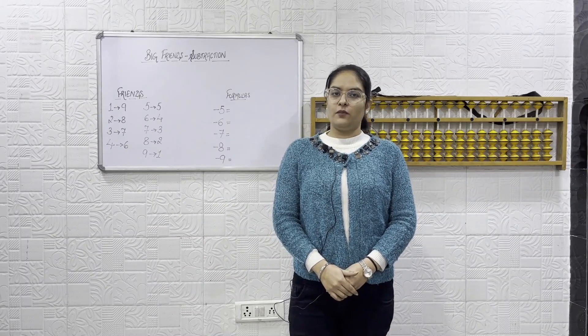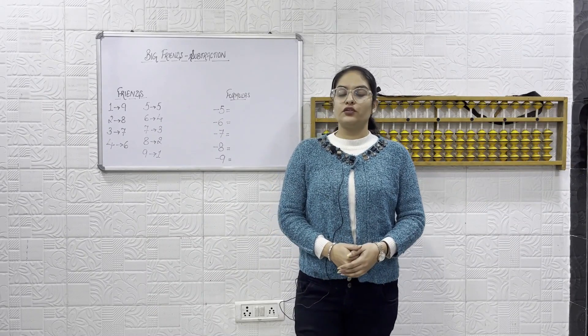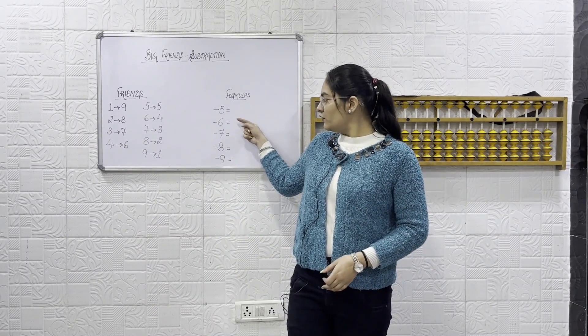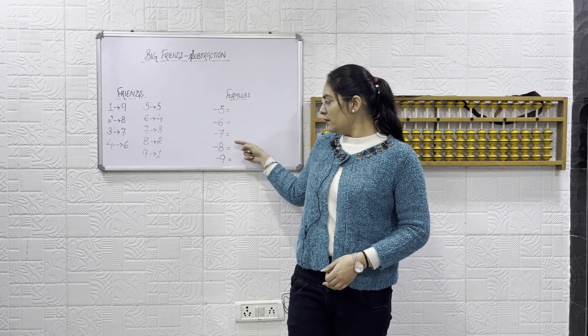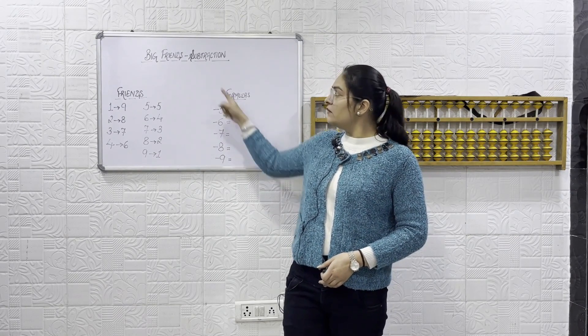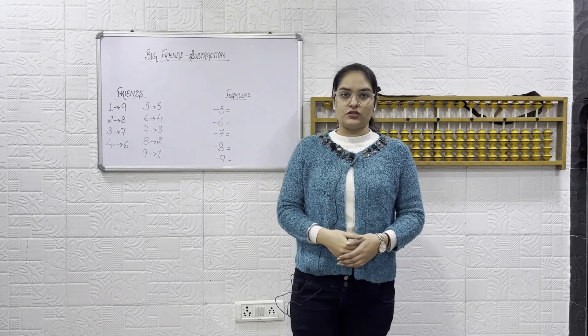Welcome back to the Brainiac Gym Academy of Abacus. Today we are going to cover the formulas of minus 5, minus 6, minus 7, minus 8, minus 9 in the bead subtraction. So let's just do a quick revision.